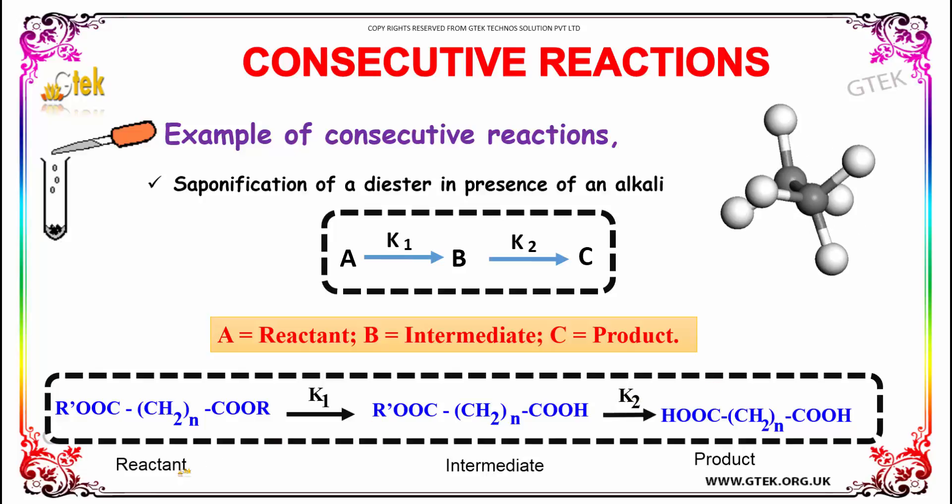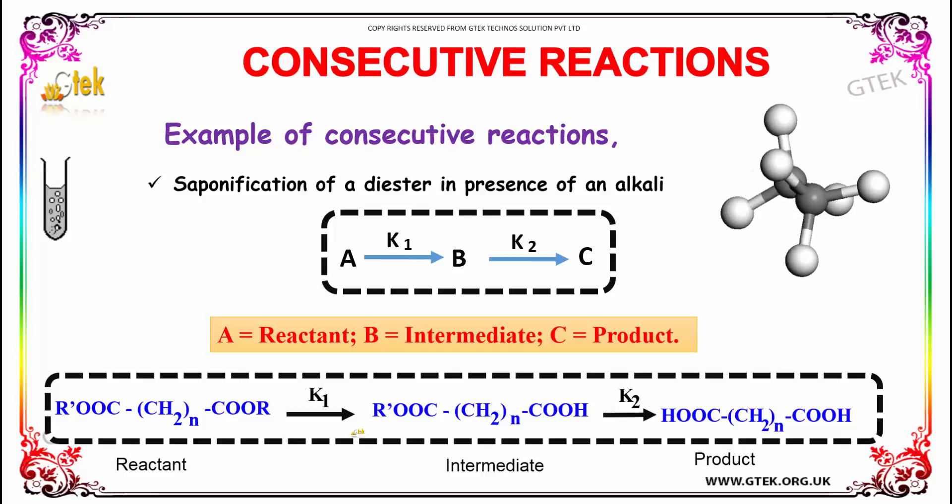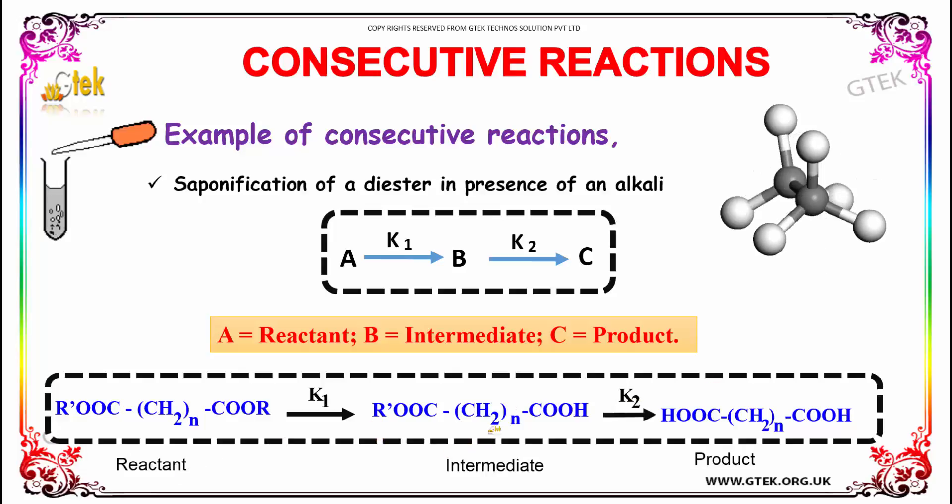You get COOH-COOH as the final product, with CS2 in the middle. Here the diester is the reactant, the mono-acid is the intermediate product, and from there you get the exact final product.